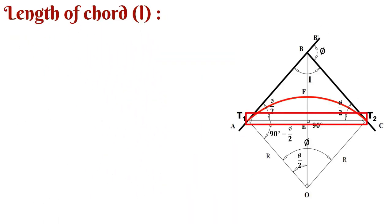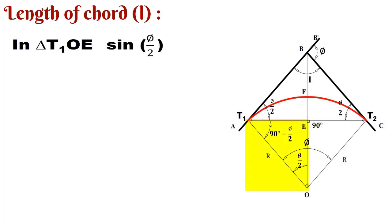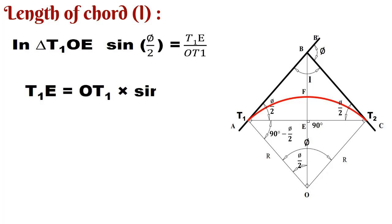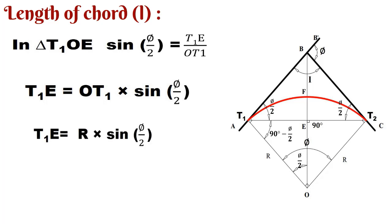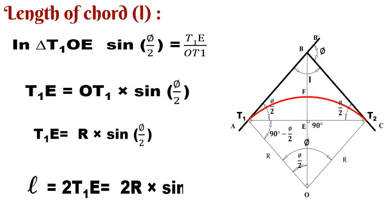Now how to find the chord length? Consider the triangle T1OE and take the sine of φ/2, which equals the perpendicular T1E divided by the hypotenuse OT1. Finding T1E: it equals OT1 multiplied by sin(φ/2). Since OT1 equals R, T1E equals R·sin(φ/2). Multiply T1E by 2 to get the total chord length: length equals 2R·sin(φ/2).